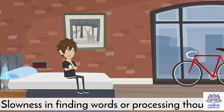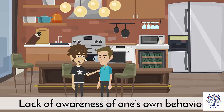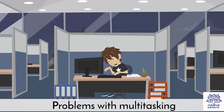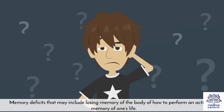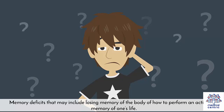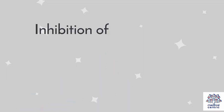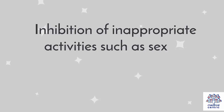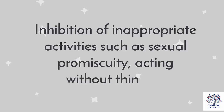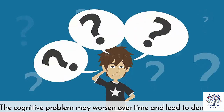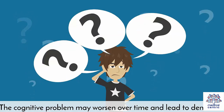Further cognitive problems include slowness in finding words or processing thoughts, lack of awareness of one's own behavior, difficulty focusing, problems with multitasking, and memory deficits that may include losing memory of how to perform an activity or memory of one's life. Inhibition of inappropriate activities such as sexual promiscuity and acting without thinking may also occur. These cognitive problems may worsen over time and lead to dementia.